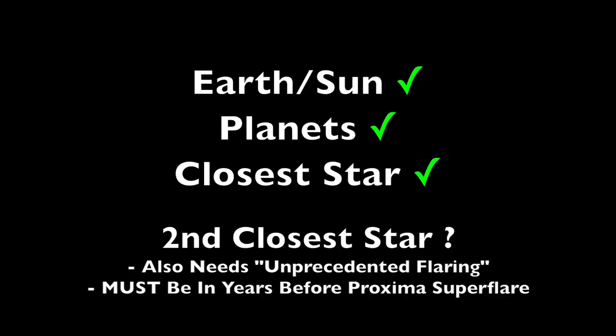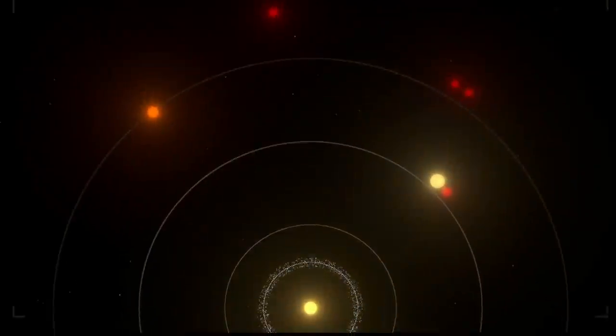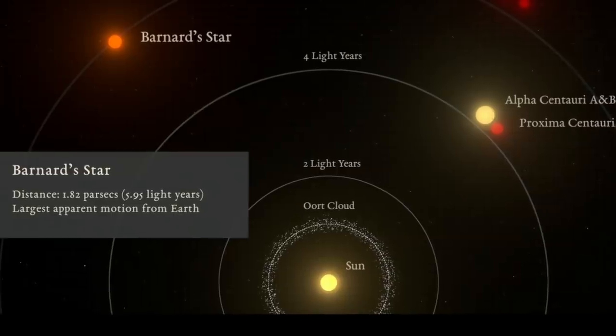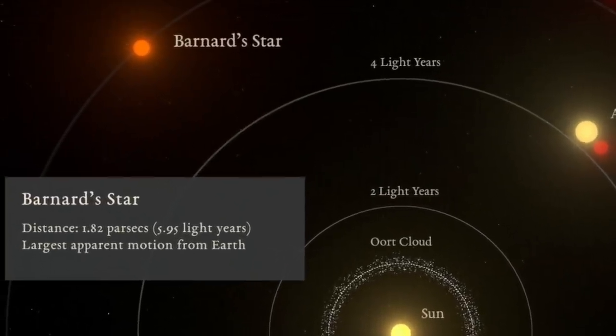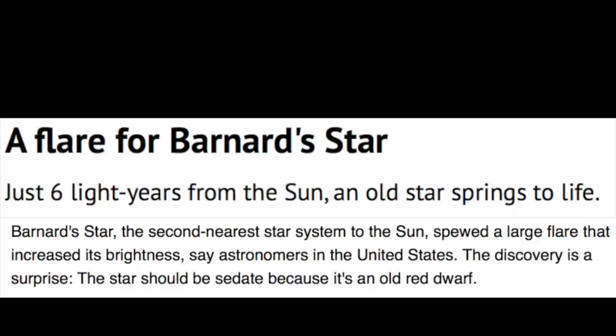We should be seeing them go off in a line right at us if this theory is correct. Okay, well, that would be Barnard's star, and that one is just two more light years away than Centauri, and it was long thought to be quiet and non-flaring in its old age, much older than the Sun and without much juice in the tank having a rotation speed of 130 days.